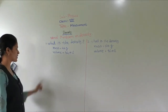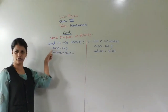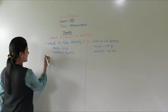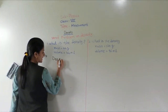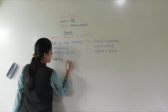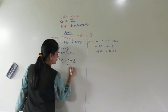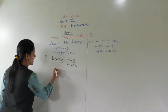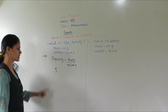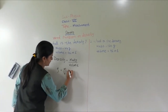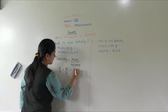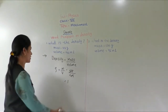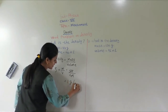The first question: what is the density if the mass is 44 grams and the volume is 44 ml? The formula for density is mass upon volume. Density is denoted by the symbol rho: rho = m upon V. Mass is 44 and volume is 44. If we divide, it comes to 1. The unit is gram per ml.